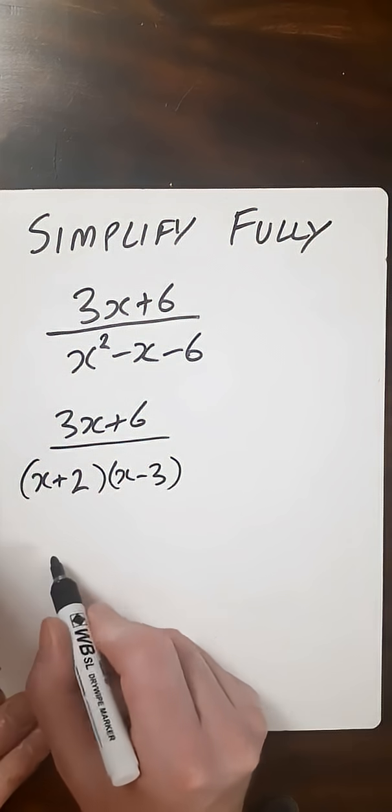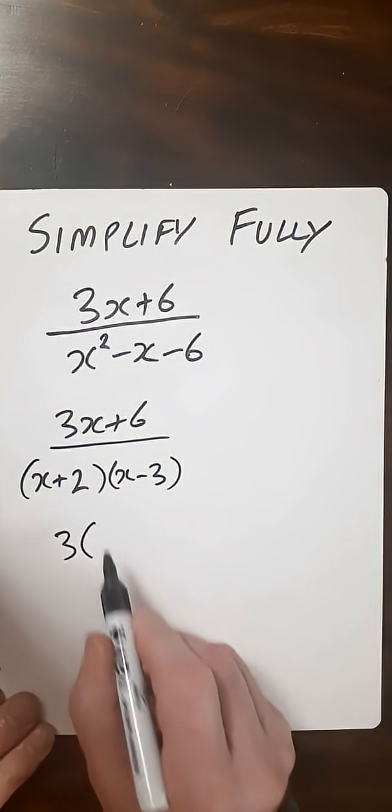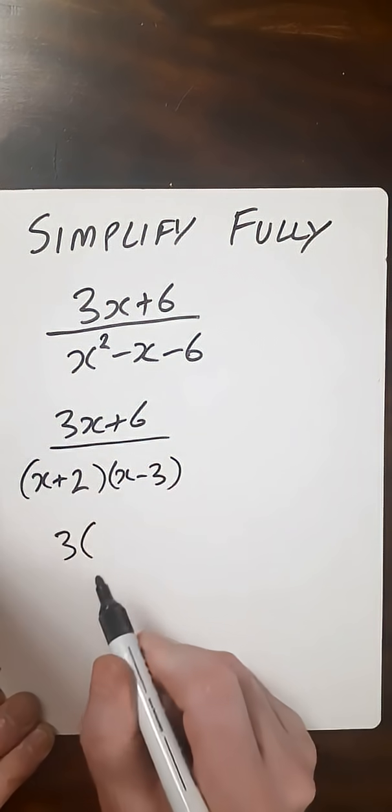Now let's factor out the numerator. Let's take out a 3 because 3 and 6 are both multiples of 3.